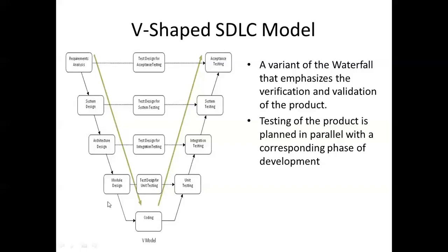Once the test design for unit testing is done, the developers start coding. Once coding is completed, testers start from unit testing, then integration testing, then system testing, and finally acceptance testing. The test cases were already prepared in parallel during the development activities, so testers use those prepared unit, integration, system, and acceptance test cases to carry out the testing. This is the V model.